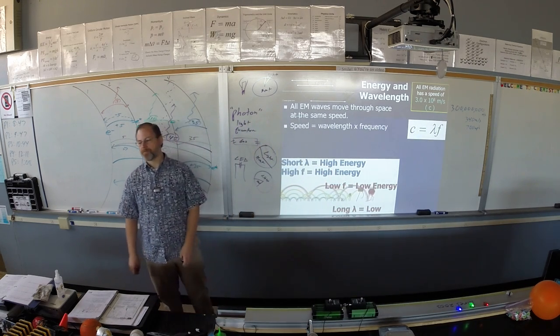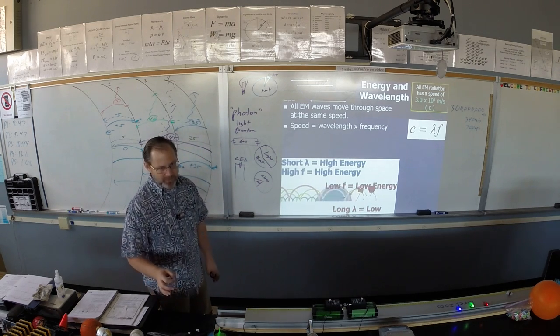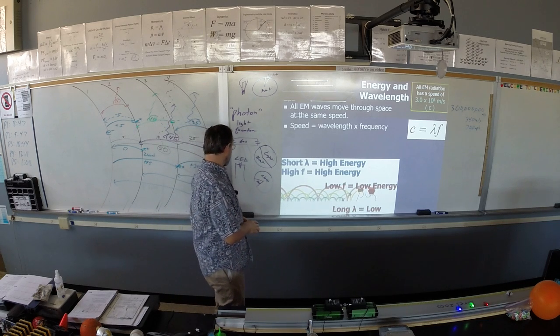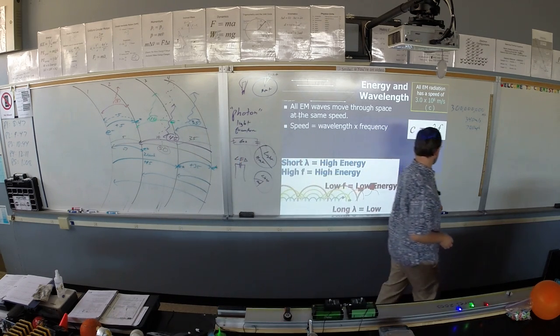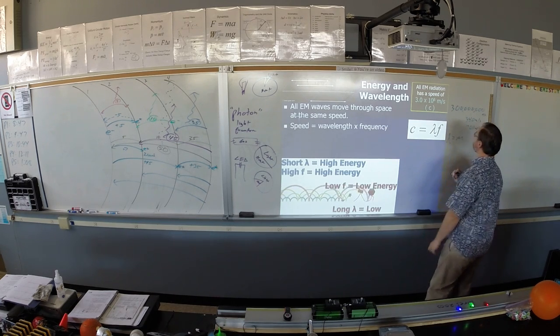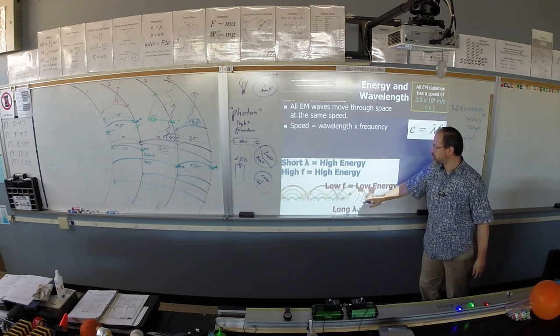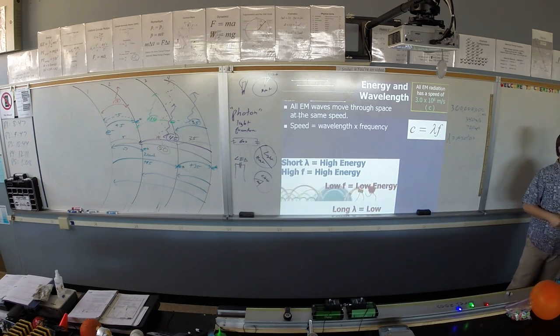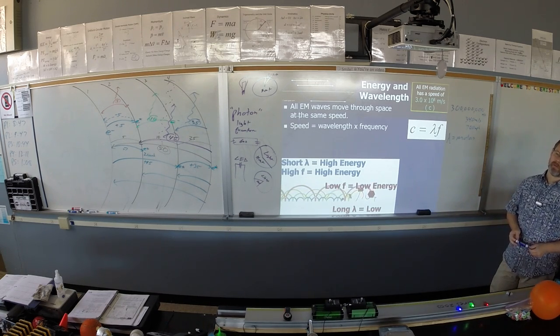Okay. So speed is wavelength times frequency. Wavelength is the distance or the size of the wave. It's how long the wave is. And wavelength gets the unit meters. So wavelength gets the unit of meters. In other words, it's the size of the jump, if you will. That's the wavelength. And the letter that we use for wavelength is lambda. Lambda. Lambda.